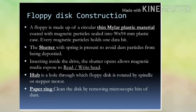When inserting inside the drive, the shutter opens and allows the magnetic media to be exposed to the read or write head. The hub is a hole through which the floppy disk is rotated by a spindle or spindle motor. A paper ring cleans the disk by removing microscopic bits of disk debris.